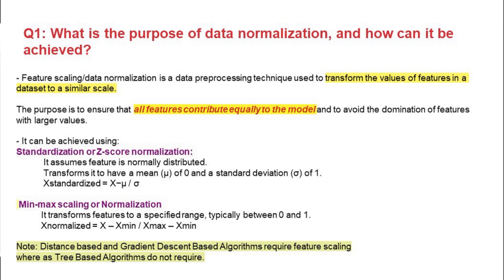How are we going to achieve it? When the feature has a normal distribution, we go with standardization, also known as z-score normalization. It is a technique in which we transform the data to have a mean of 0 and standard deviation of 1.